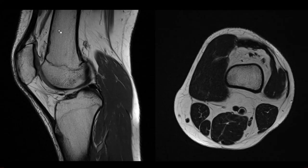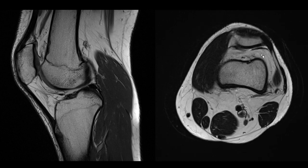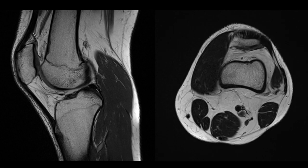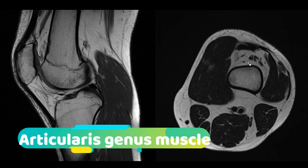Now let me show you the answer to the name of this muscle. First you can appreciate its long orientation and that it has the same signal intensity as other muscle. In the axial view you can see several different bundles running from proximal to distal, inserting into the synovial recess of the suprapatellar recess. The name of this muscle is the articularis genus muscle. It typically has several bundles, originates from the femur shaft anteriorly, and inserts into the synovial membrane. Its function is believed to be pulling the suprapatellar recess during knee extension to prevent impingement of the recess in the patellofemoral joint.